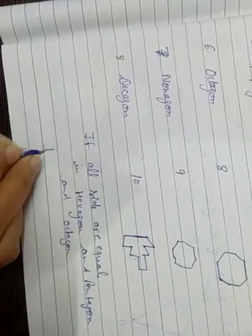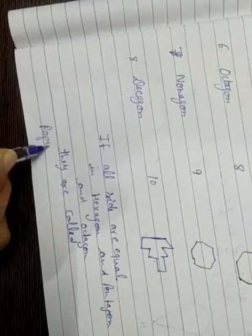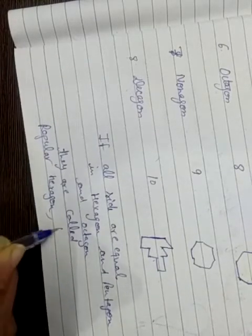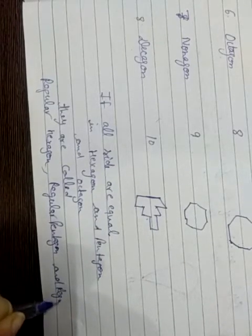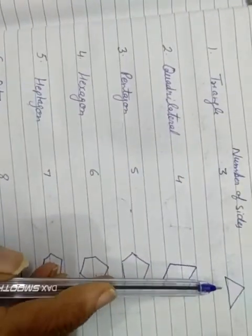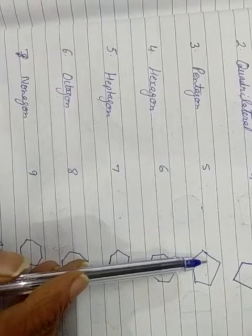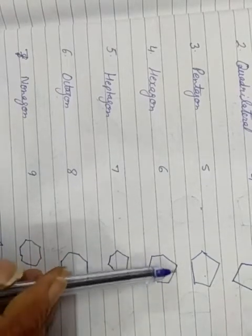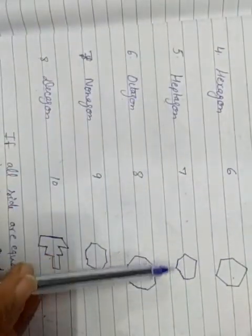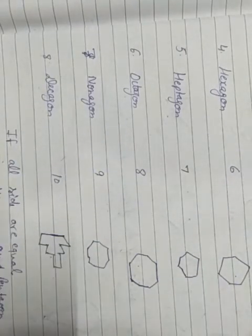If all sides are equal in a hexagon, pentagon, or octagon, they are called regular hexagon, regular pentagon, and regular octagon. If three sides of a triangle are equal, they are called an equilateral triangle. If four sides are equal, it is called a rhombus or square. If all sides of a pentagon are equal, it is a regular pentagon, and if all sides of a hexagon are equal, it is a regular hexagon.